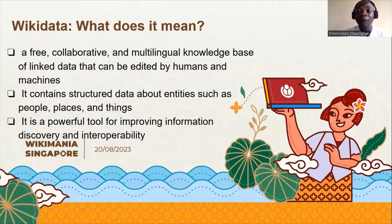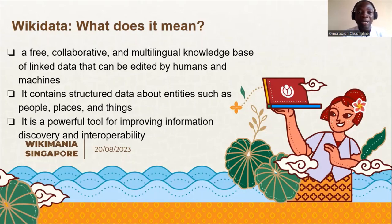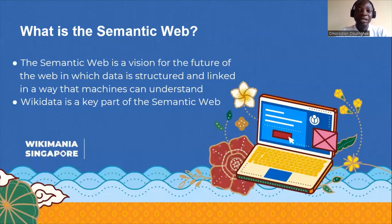Wikidata, as it has been commonly defined, is a free multilingual knowledge base of linked open data that can be edited by humans or machines alike. The technology is seen as a knowledge base of linked data. It contains structured data with entities about people, places, institutions, organizations and so on. So it's a powerful tool for improving accessibility to information. It was launched in 2012. Because of the linked nature of Wikidata, it is considered a semantic web technology and allows for use of structured data in a linked environment.